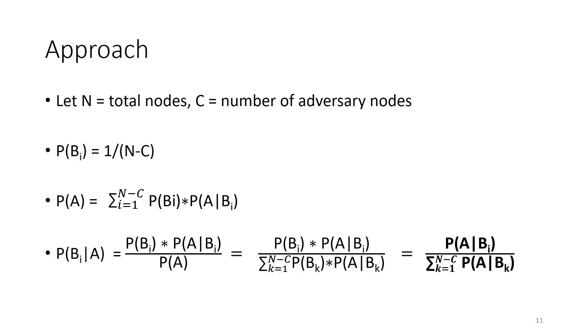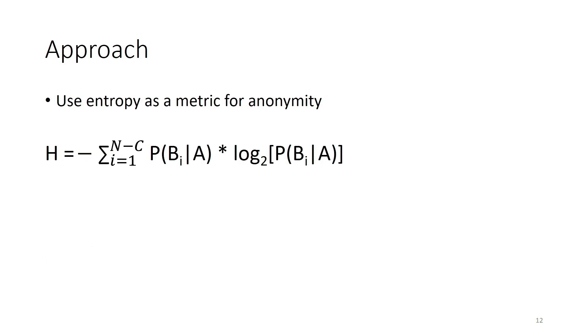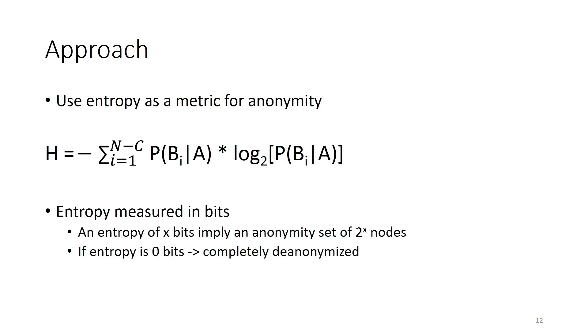Taking the original Bayes' formula, PBI given A simplifies to PA given BI divided by the summation over all honest nodes K. The essential idea is: if we can calculate PA given BI for all I, we can model the probability of each node being the originator. Once we have this probability distribution, we calculate entropy over it to quantify the adversary's certainty about the originator. Entropy is measured in bits: a value of X bits means there are 2^X possible originators. If entropy is zero, the sender is completely de-anonymized.